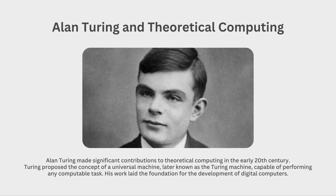Alan Turing is a prominent figure in computer science and computer history — it is worth reading more about his personality. Alan Turing made significant contributions to theoretical computing in the early 20th century. Turing proposed the concept of a universal machine, later known as the Turing machine, capable of performing any computable task — just as you see artificial intelligence today. His work laid the foundation for the development of digital computers, when it was once considered impossible to imagine computers as lifelong companions.